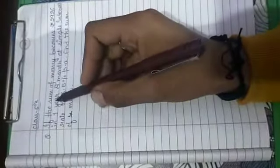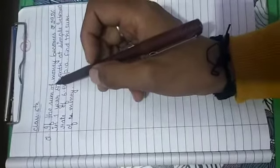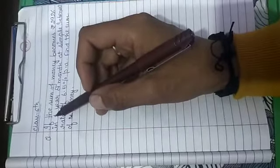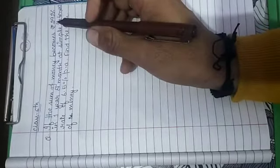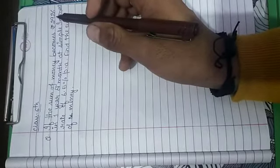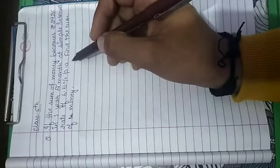In today's video, we will study an example where we have to find the sum of money. The question asks: if the sum of money becomes 2926 in one year eight months at a simple interest rate of 6.5% per annum...